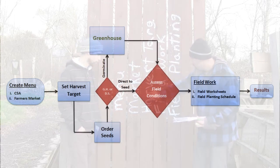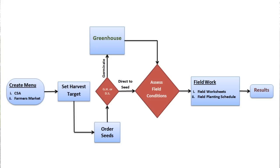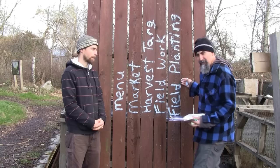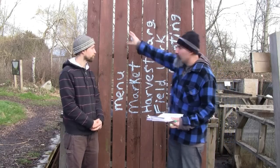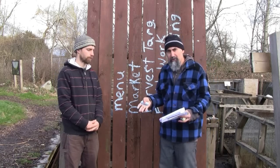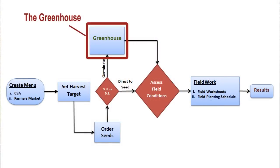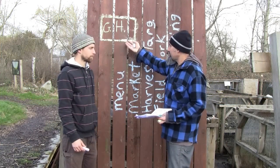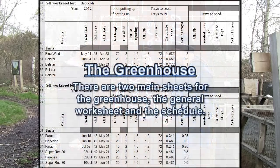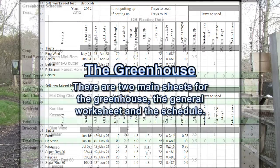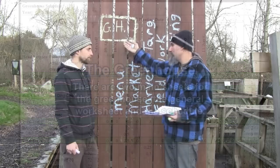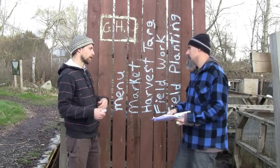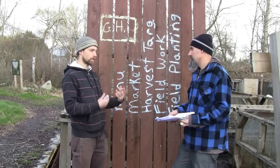So those are basically the five main sections in the spreadsheet — starting from the menu all the way to the field planting. But within this there are different modules, and one of them is the greenhouse. Basically there's a whole bunch of prep work that you need to do in the greenhouse to get your seedlings germinating so you can plant them in the field. When you go to the farm, this is where you start — doing seedlings while also doing field work at the same time, prepping stuff like tilling and adding compost.